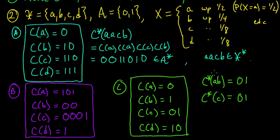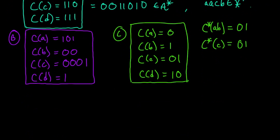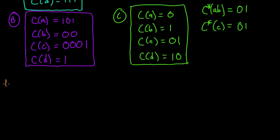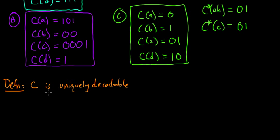Another way to say that is: if two sequences of source symbols are different, then they generate different sequences of code words — not just different sequences of code words, but different sequences when you look at the actual code symbols, the actual sequence of zeros and ones that the code words make up. There is a nice mathematical concept for just this thing, and so we can define the property of C being uniquely decodable.